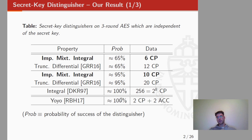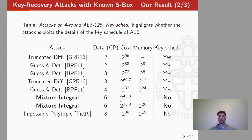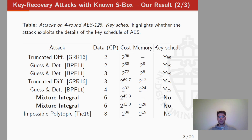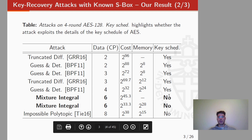So I think this is our main result, and a large part of this presentation is about this new distinguisher. Apart from that, we are going to present new key recovery attacks for AES, either in the case of a known S-Box or in the case of a secret S-Box. In particular, we are going to present new attacks on 4-round AES-128. Our attacks require 6 chosen plaintexts, but they don't exploit the details of the key schedule. Among the attacks that don't exploit the key schedule, our attacks are the best.